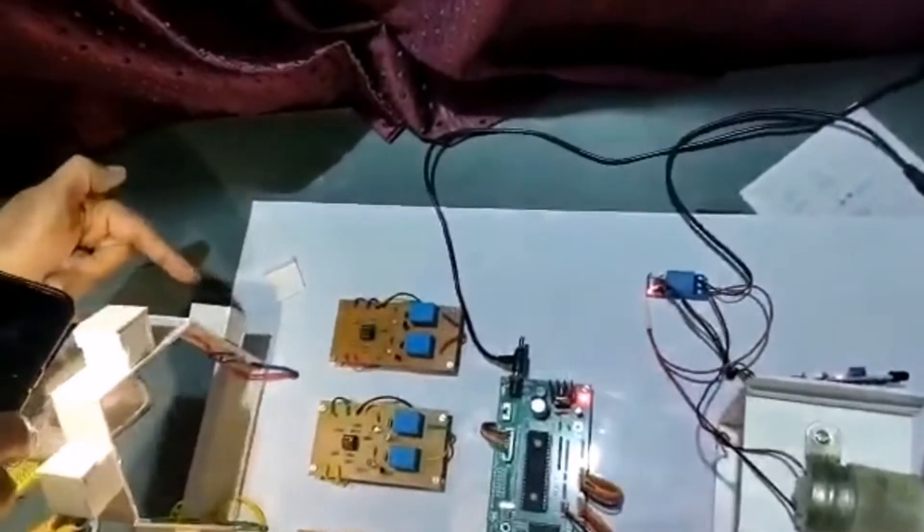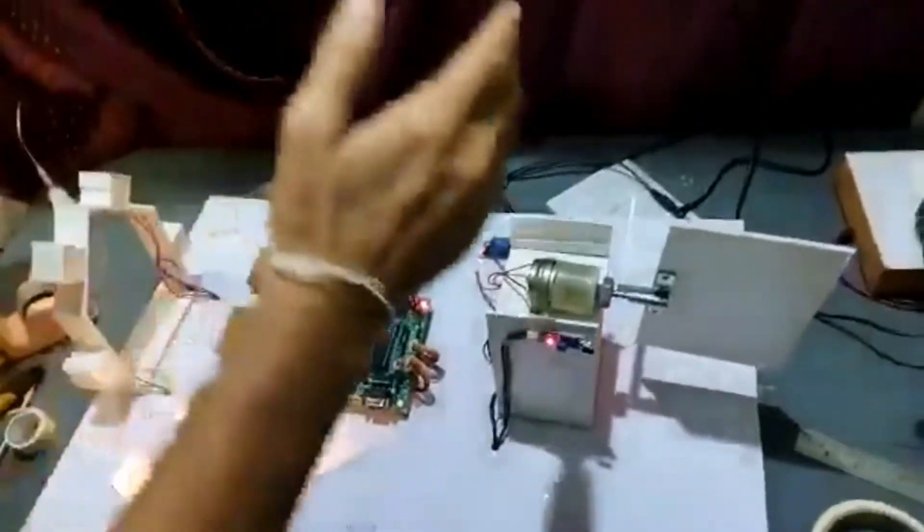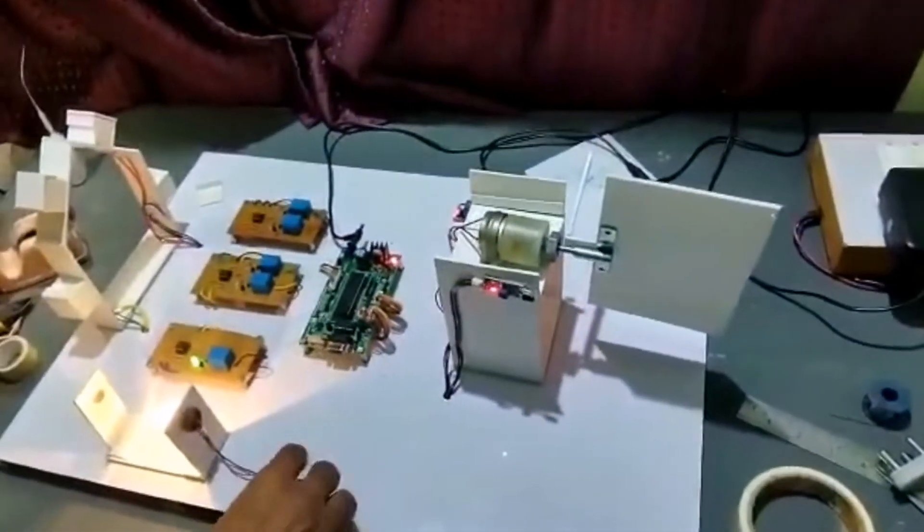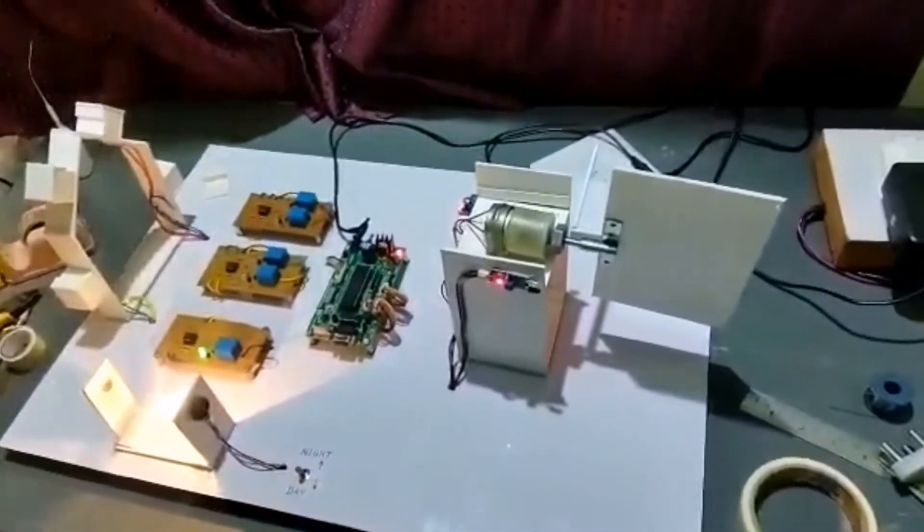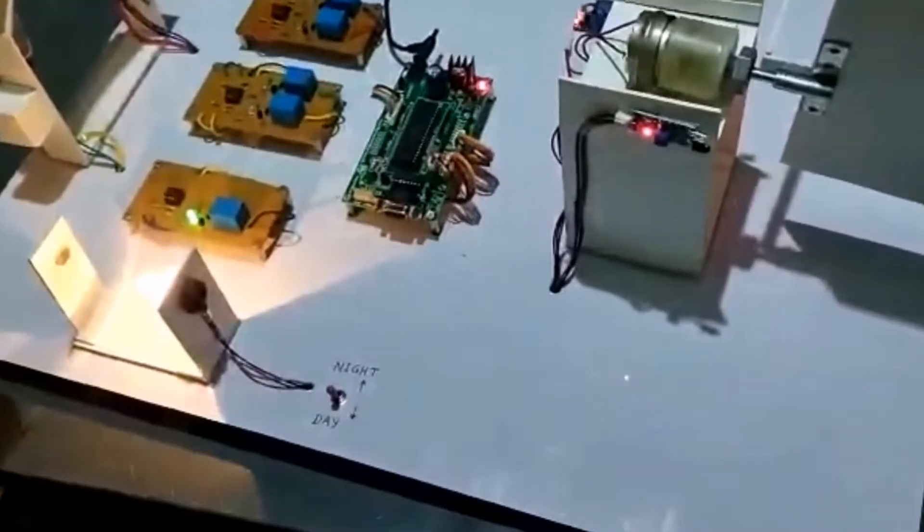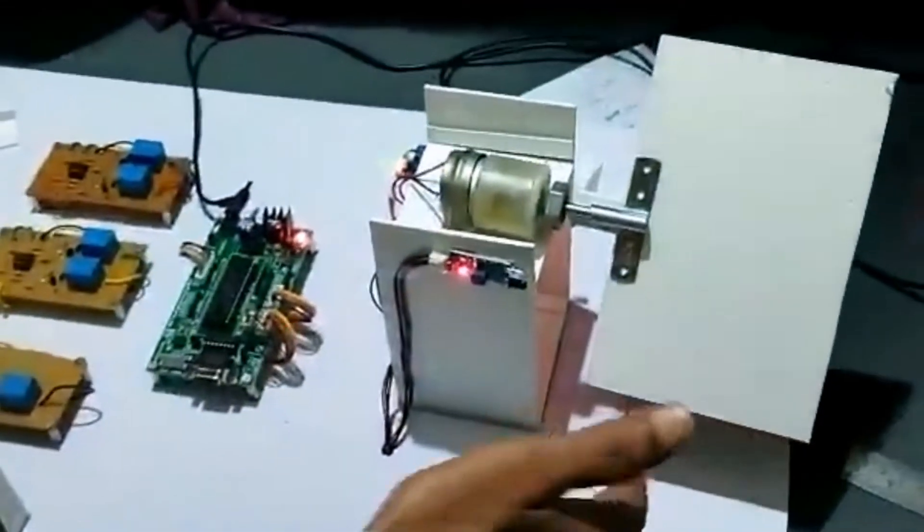Next, this is the evening sensor. It is towards west. Until sunset occurs, this will be taking this position. Suppose sunset means I have to switch off. See here, I will make it off. Then it will take a night position.